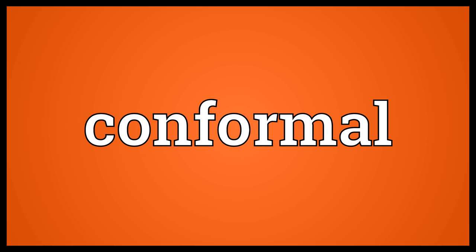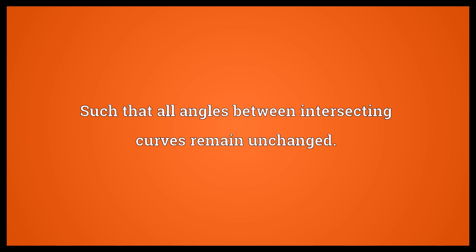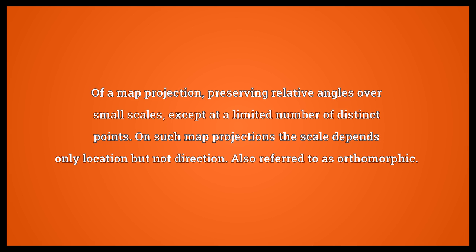Conformal: such that it conforms, especially that matches the shape of something; such that all angles between intersecting curves remain unchanged. Of a map projection, preserving relative angles over small scales, except at a limited number of distinct points. On such map projections the scale depends only on location but not direction. Also referred to as orthomorphic.